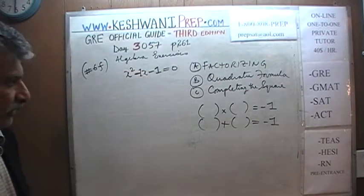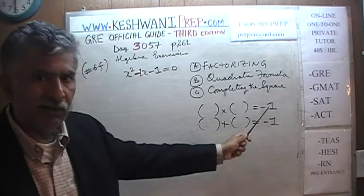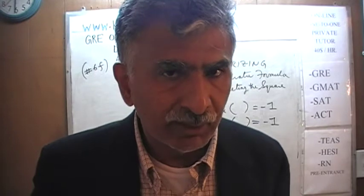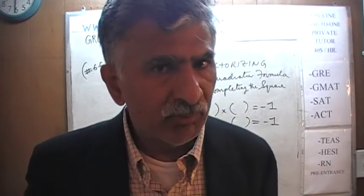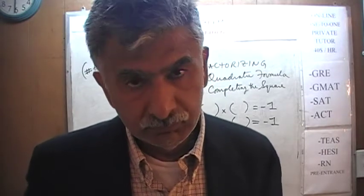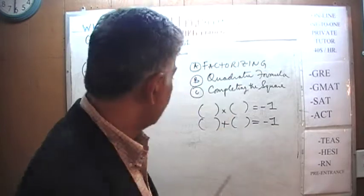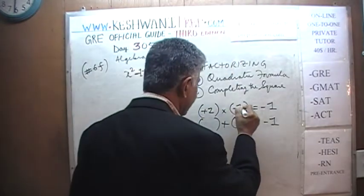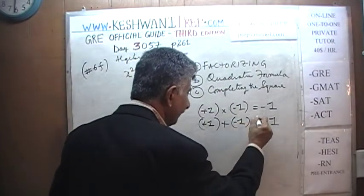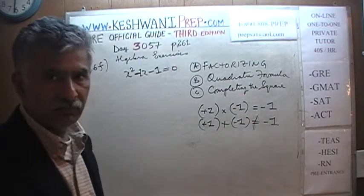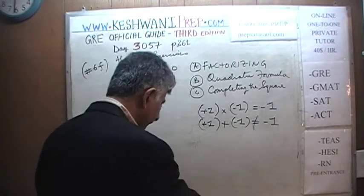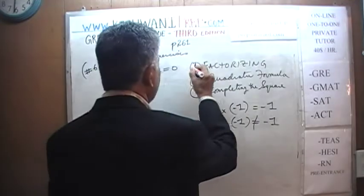The problem is this: because the product has to be negative one, one number must be positive and the other negative — they cannot both be negative or both positive. So one must be positive one and the other negative one. But positive one plus negative one equals zero, not negative one. Therefore it cannot be factorized — factorization does not work here.